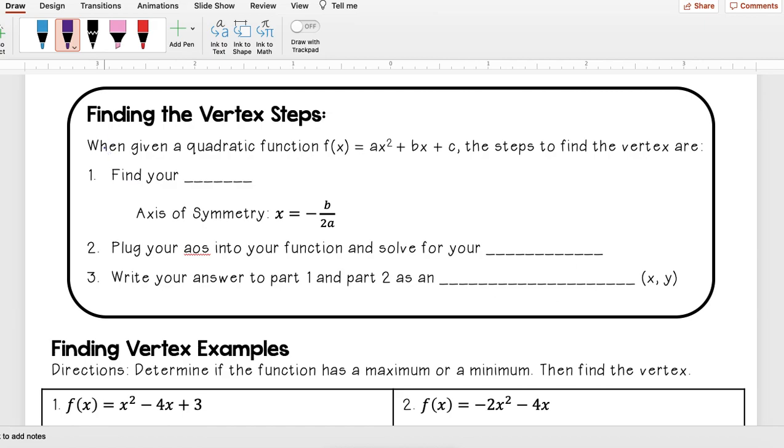When given a quadratic function f(x) = ax² + bx + c, the steps to find the vertex are: first, find your axis of symmetry. In other words, AOS, which was x = -b/(2a). Second, plug your AOS into your function and solve for your y value. Then three, write your answer to part one and part two as an ordered pair (x, y).